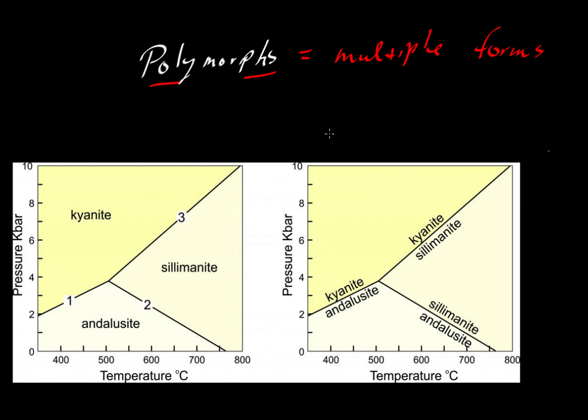We're going to use this diagram from Dexter Perkins' online mineralogy textbook to illustrate. All of the minerals shown have the formula Al2SiO5 - two aluminum atoms, a silicon atom in fourfold coordination, and five oxygens per formula unit.